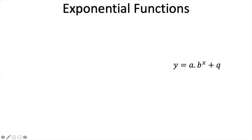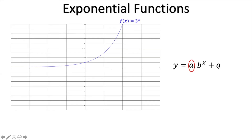Now let's start looking at the standard form. The standard form of an exponential function in grade 10 is y equals a times b to the power of x plus q. Let's start by looking at what a does, using our original increasing function of 3 to the power of x. The a value there is 1, because it's 1 times 3 to the power of x.